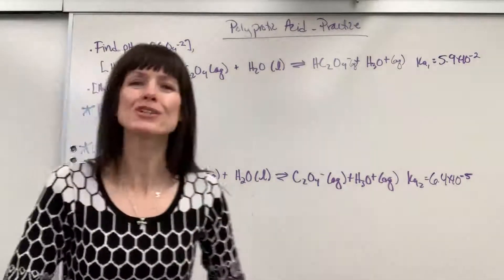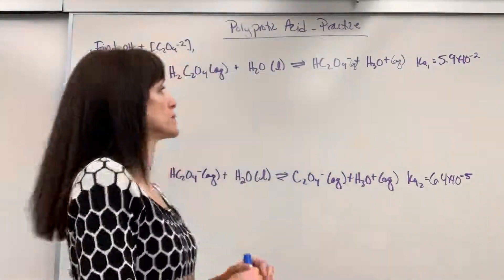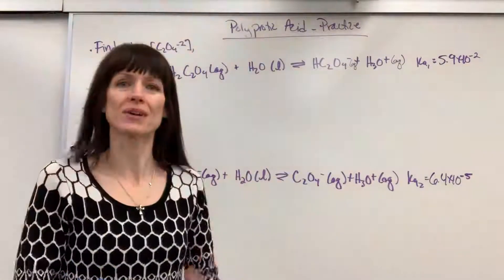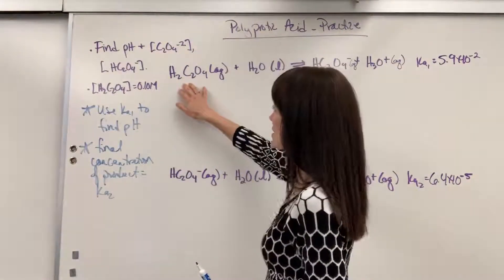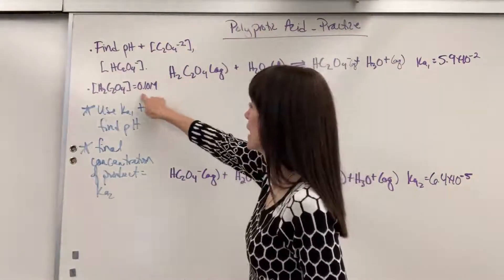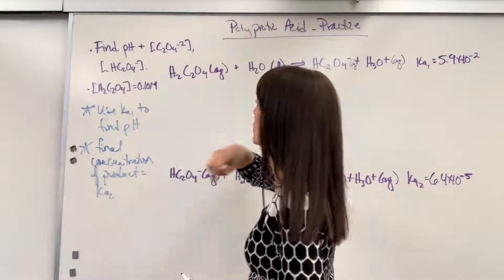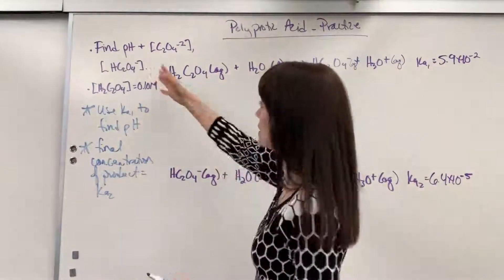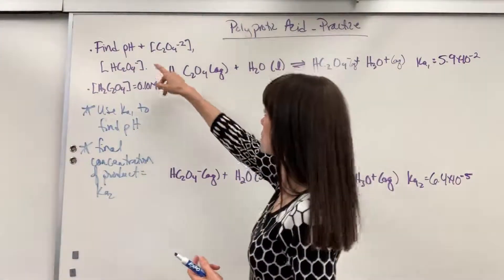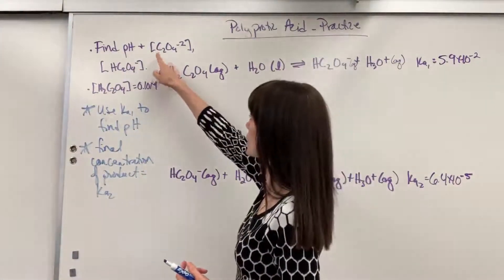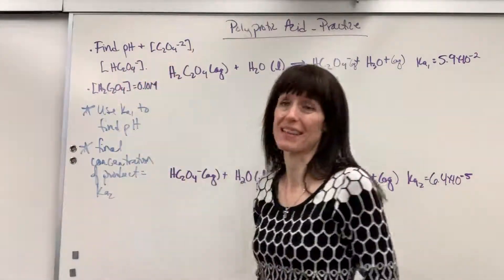I want to show and prove this to you. So let's go ahead and work this together. We are given oxalic acid with an initial concentration of 0.10 molar. We need to find pH, and it also wants to know the final concentrations of the oxalate ion and the hydrogen oxalate.